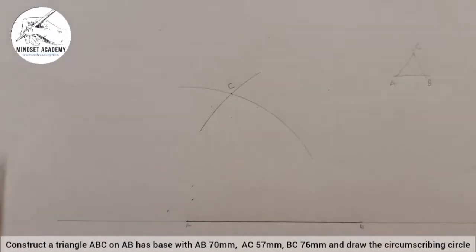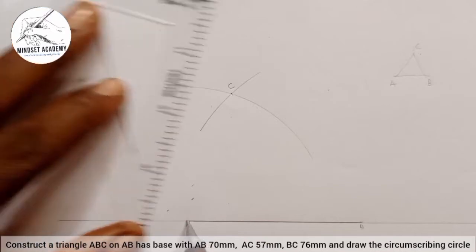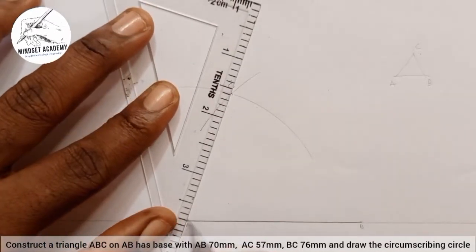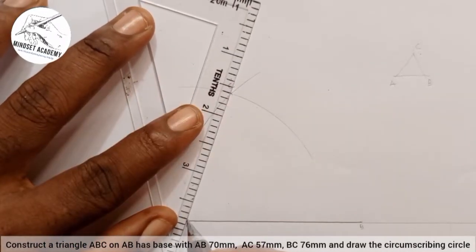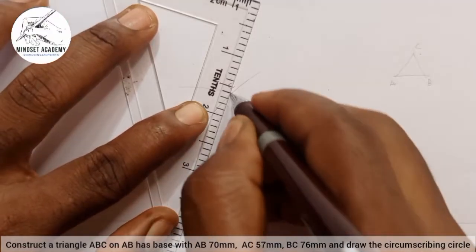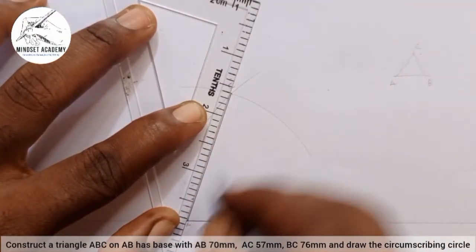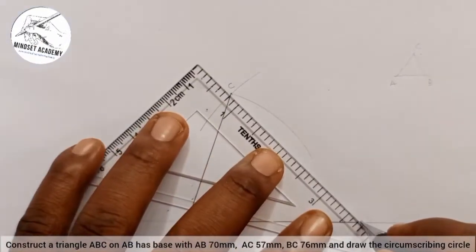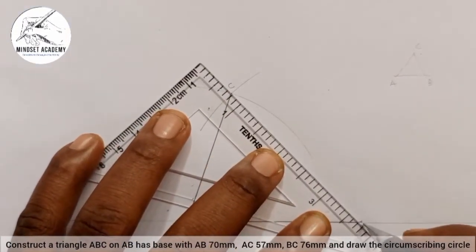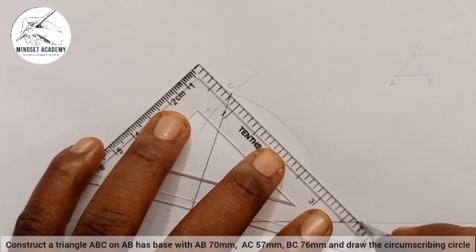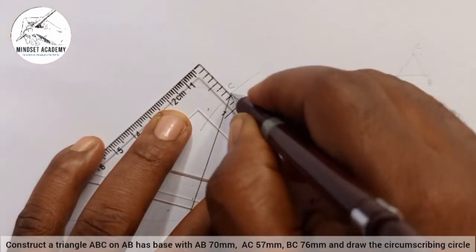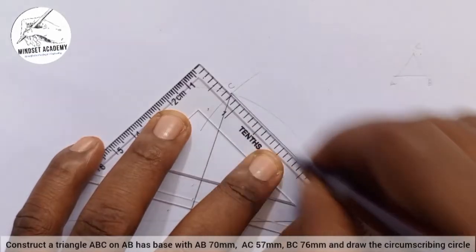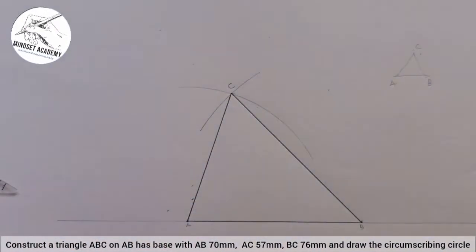So I will join a line connecting A to C, then B to C. So I have successfully constructed the triangle.